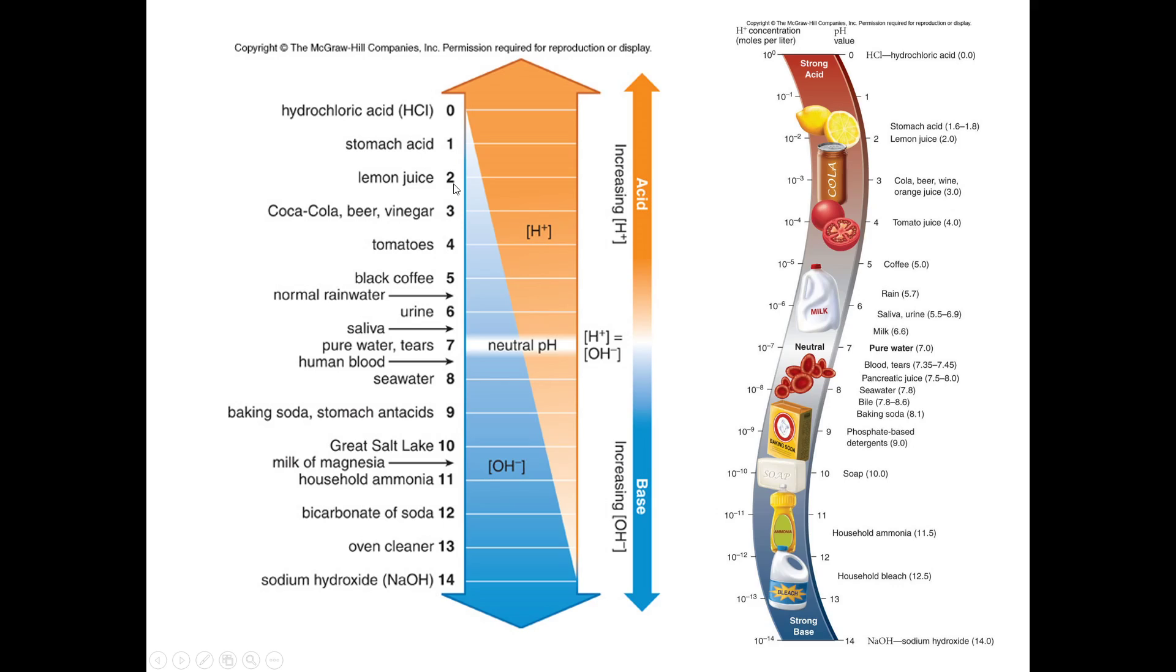Buffers basically maintain the pH where it's supposed to be because that's what's needed for your stomach acid or for your blood or for your urine or whatever the case may be.